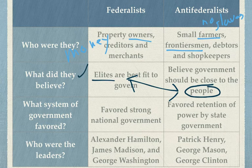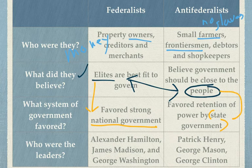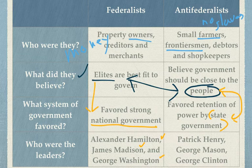Because of these beliefs, the system of government they favored is very different. Federalists wanted a strong national government because that's where they thought elites would end up. Anti-Federalists wanted state governments to retain the body of power because that was closest to the people. As for leaders — you're probably familiar with the Federalist leaders: Hamilton, Madison, and of course George Washington. You may be less familiar with Anti-Federalist leaders like Patrick Henry, George Mason, and George Clinton, governor of New York. Patrick Henry is probably the one you're most likely to have remembered.